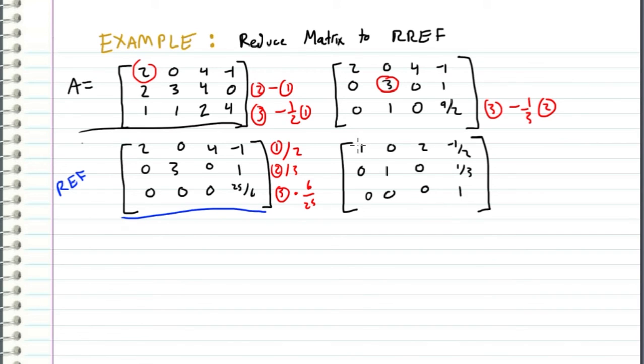Alright, so this pivot doesn't have any non-zero entries above and below it, and neither does this pivot, so our only other pivot is this pivot, so we just need to cancel everything above it.